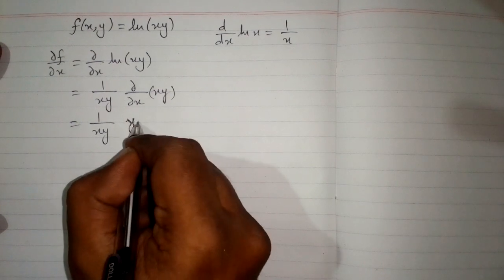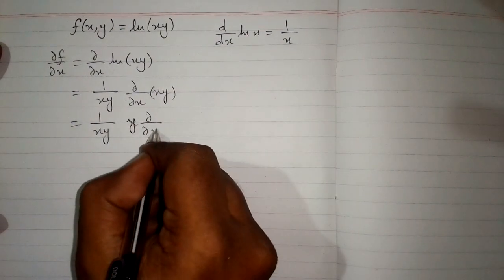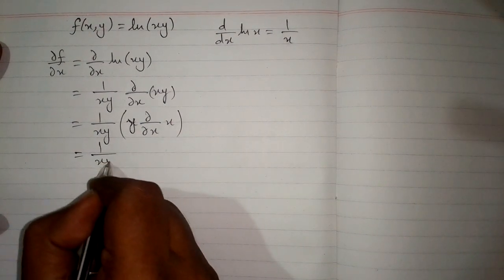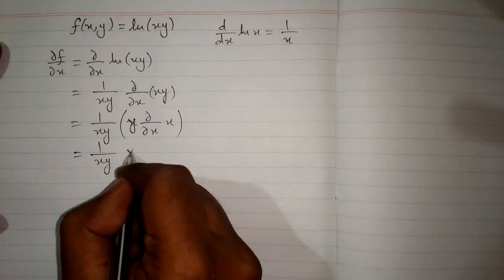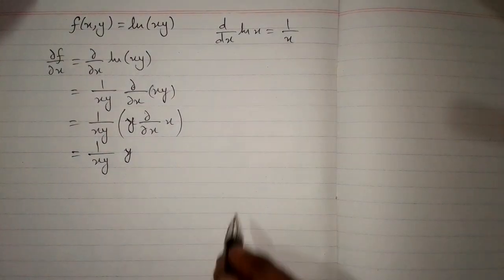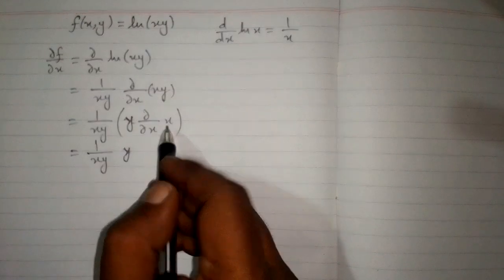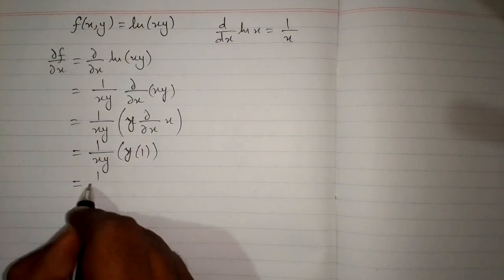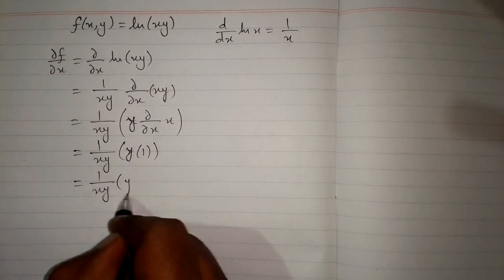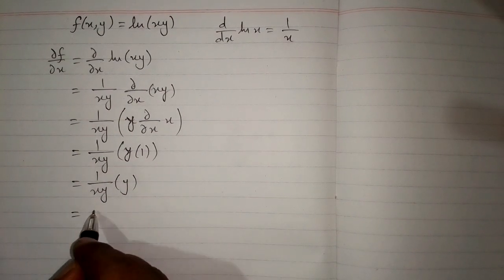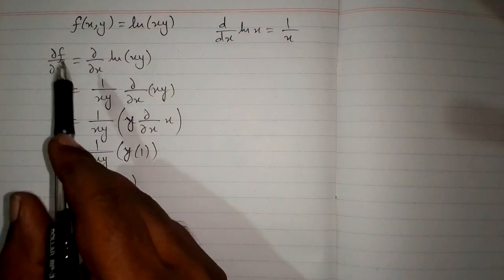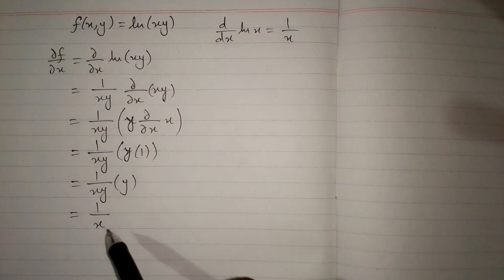First we will write y, then the partial derivative of x with respect to x. We have y times the partial derivative of x, and the derivative of x is 1. So we write 1 there. Then we have 1 upon xy multiplied by y, and this can be simplified to 1 upon x. So the partial derivative of f with respect to x is 1 upon x.